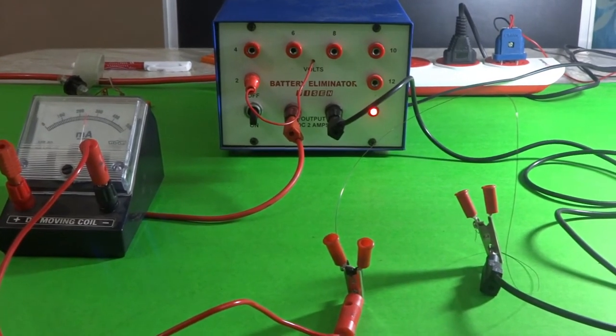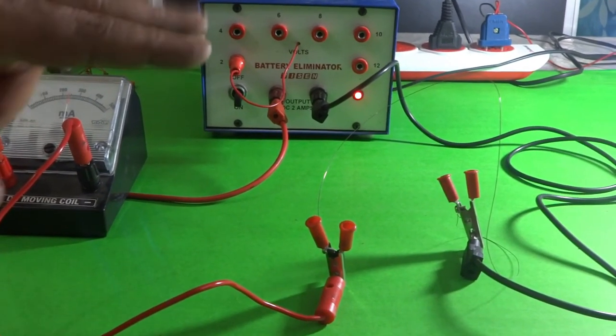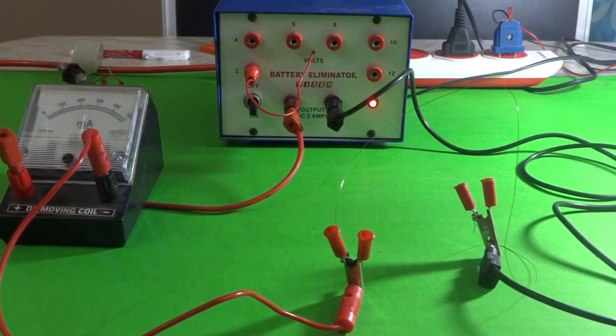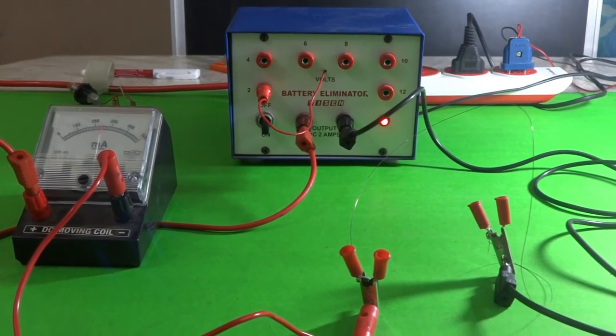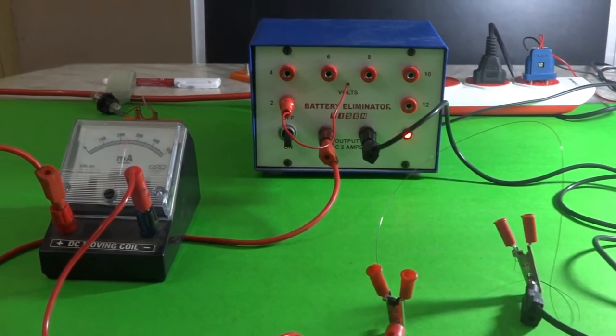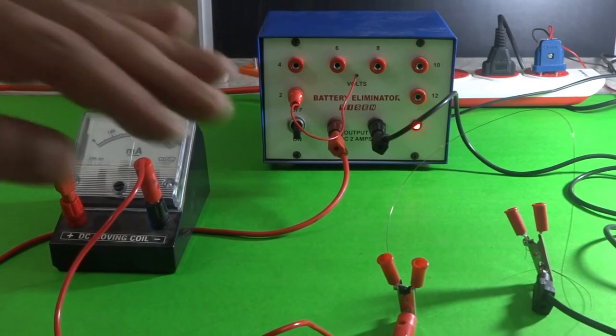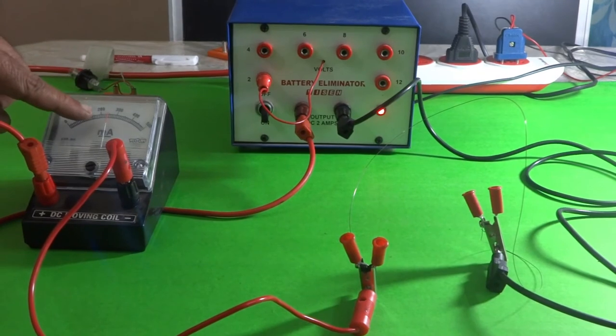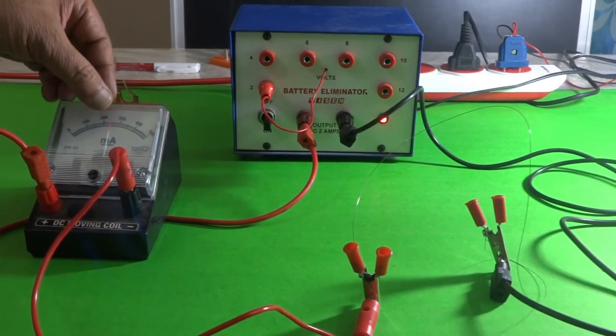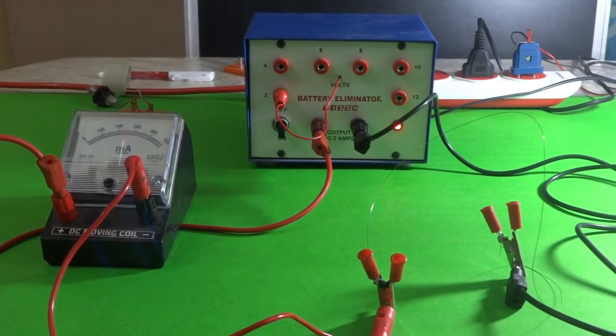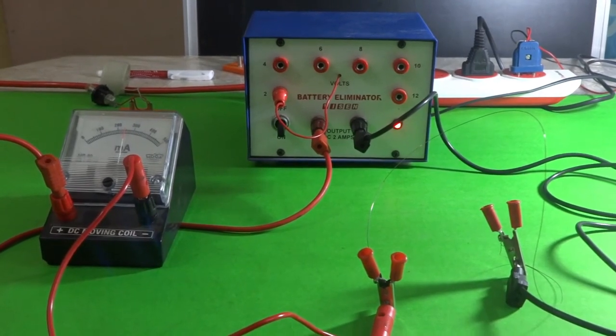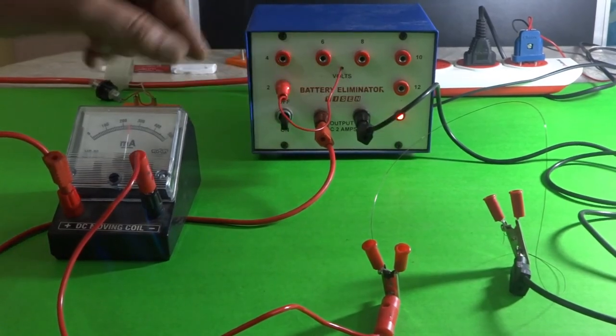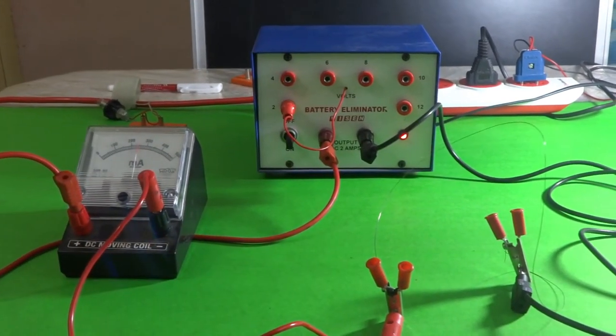For each component, we are getting different readings. Why are we getting these different readings? It is because of the resistance offered by the three components. In the case of this wire, the milliammeter is showing 250 mA, and when compared to the two other bulbs, it is more. Therefore, we can conclude that this wire is allowing more current through it.